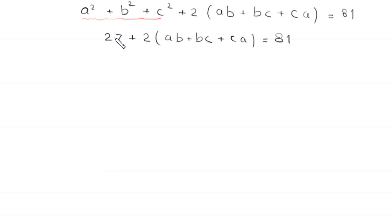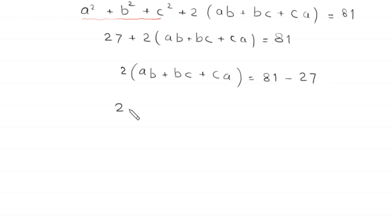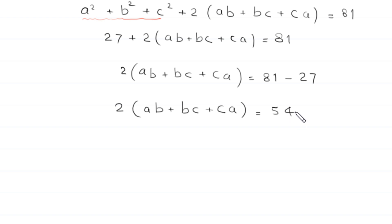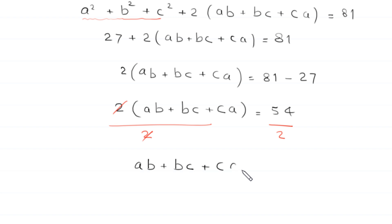Now we move 27 to the right-hand side. This becomes 2 times ab plus bc plus ca is equal to 81 minus 27, which is 54. Dividing both sides by 2, we get ab plus bc plus ca is equal to 27. Let us call this equation number 3.